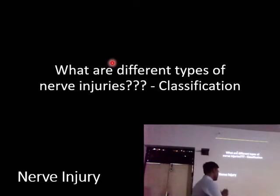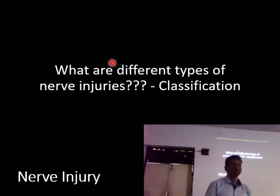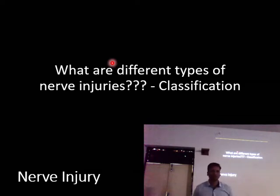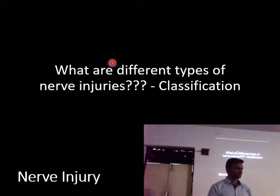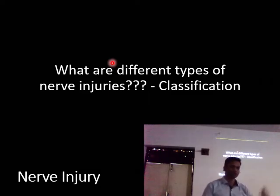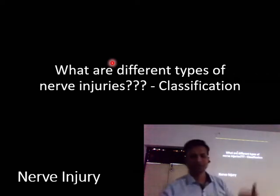Now we come to the classification of nerve injuries. Why do we need classifications? The two main purposes are treatment planning and communication. Instead of listing every damaged structure — endoneurium damage, perineurium damage, myelin sheath loss — we simply state the class of injury, and a colleague who knows the classification will immediately understand what structures have been damaged. That is the purpose of classification.